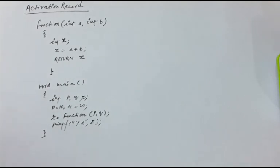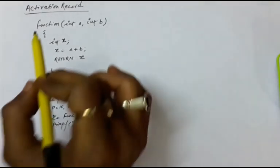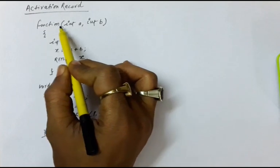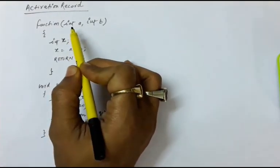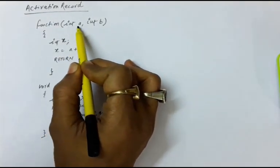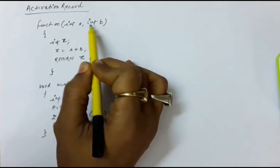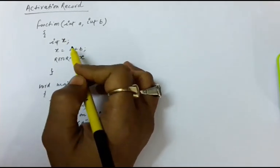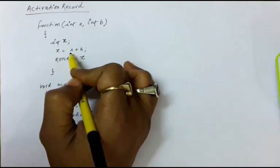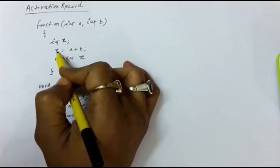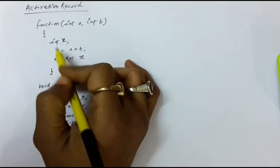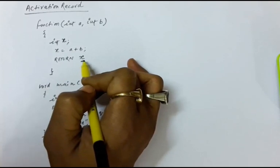In this lecture, we will discuss the concept of the activation record. Suppose we have a function named 'function', which is a user-defined function in which two parameters are passed as a and b. You are performing the addition of these two numbers. You have taken a local variable x, applied the formula x equals a plus b, and this value x is returned.